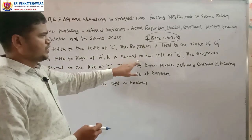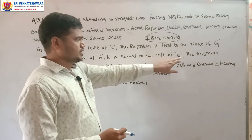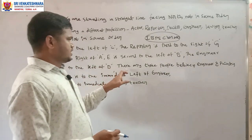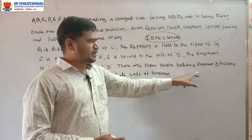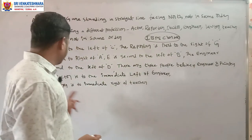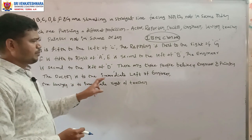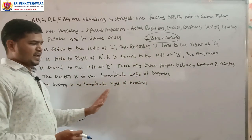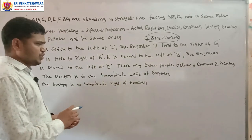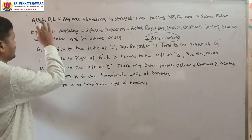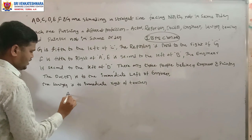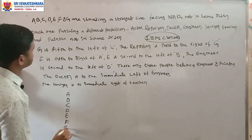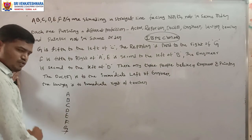Further conditions: E is second to the left of B, the engineer is second to the left of D, there are only three people between the engineer and the painter, the doctor is to the immediate left of the engineer, and the lawyer is to the immediate right of the teacher. Total positions are seven — A, B, C, D, E, F, G.